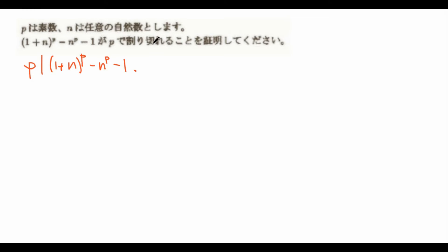So how might we go about doing this? Just as a side note, the anime is based on a middle school, so these problems were given to middle schoolers, which I think is pretty surprising because some of the problems they give are actually pretty hard. One idea would be to use the binomial theorem. Because we have this term 1 plus n to the power of p, this reminds us of the binomial theorem, and that minus n to the power of p minus 1 actually helps out because it cancels out some of the terms in the expansion.